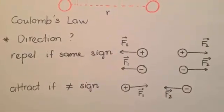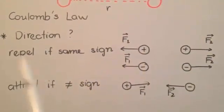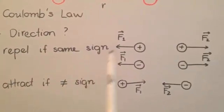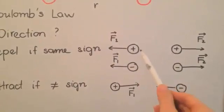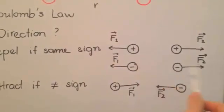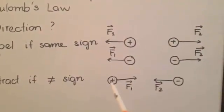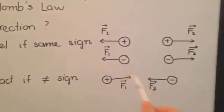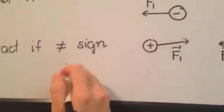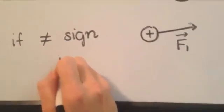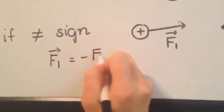How about the direction of the force? It totally depends on the sign of charges. They repel if they have the same sign. For example, two positive charges or two negative charges, they repel. But they attract if they have different signs. For example, one positive and one negative, they will attract each other. And based on Newton's third law, we will have F1 equals negative F2.